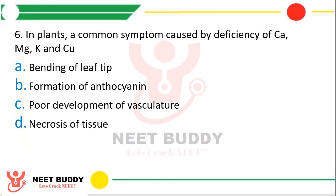Question 6: In plants, a common symptom caused by deficiency of calcium, magnesium, potassium, and copper is? Option A, bending of leaf tip. Option B, formation of anthocyanin. Option C, poor development of vasculature. Option D, necrosis of tissue. The correct answer is Option D — necrosis of tissue, and most specifically leaf tissue.